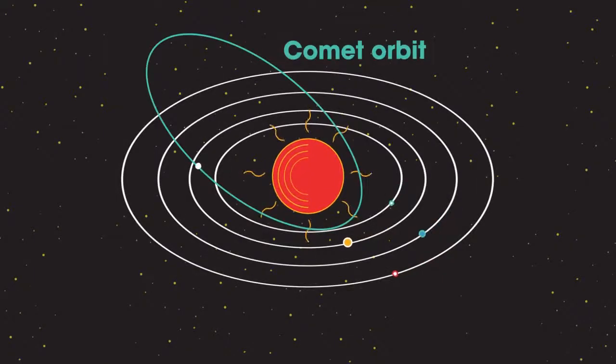Comets are similar to large dirty snowballs, a few tens of kilometers across, that follow a huge elliptical path around the Sun that may take decades, centuries or longer to complete one orbit.